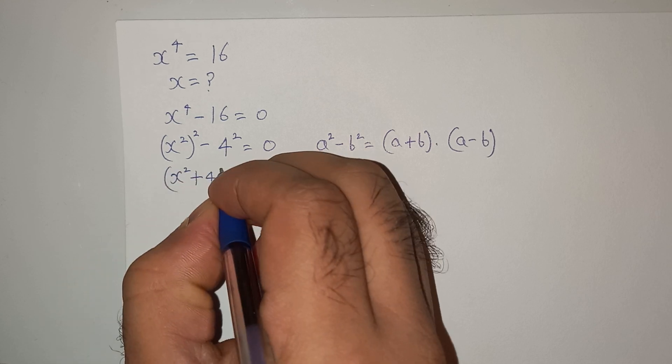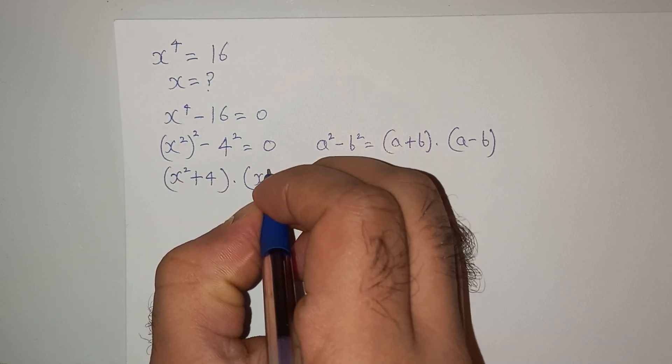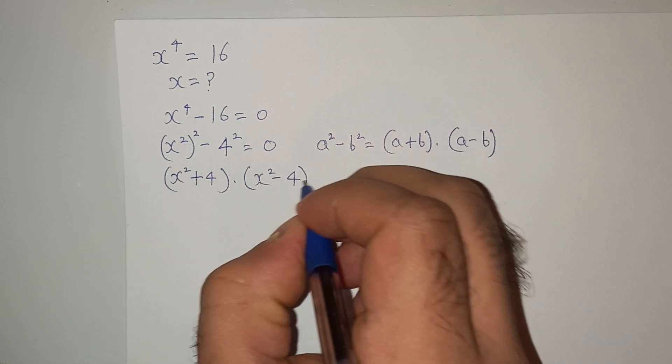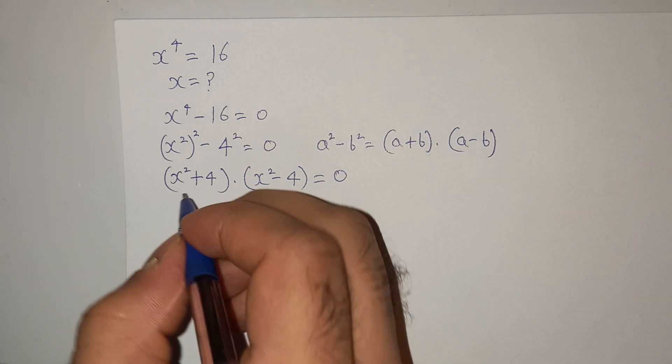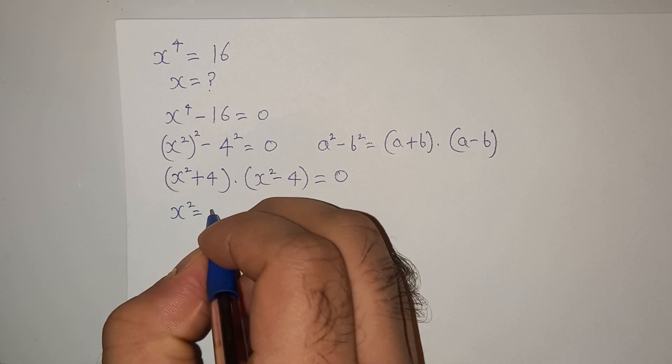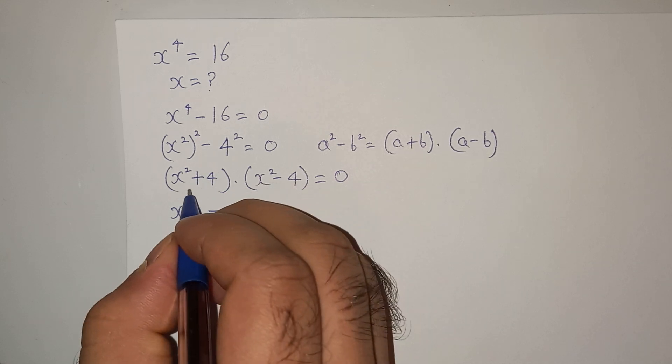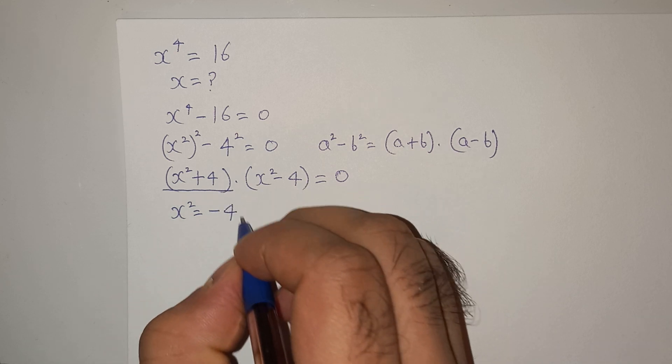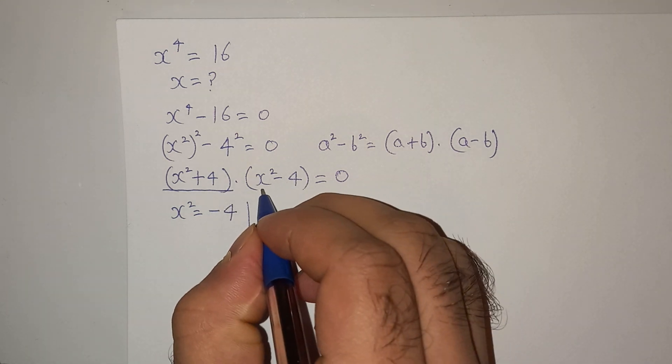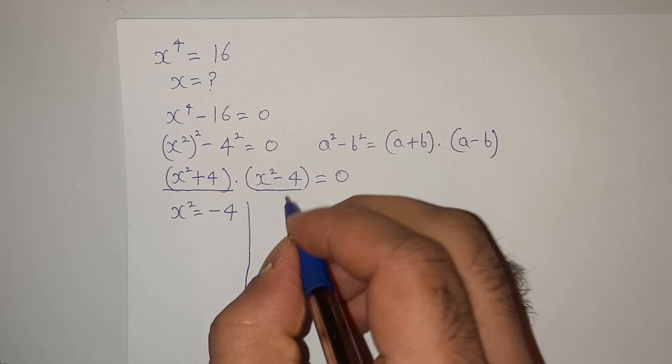This is going to give us x square equals minus 4, because I have equated this value to 0. And another one would be, I'll equate this expression to 0.